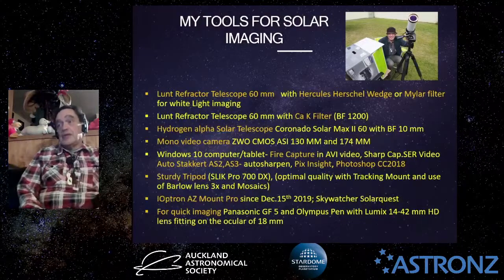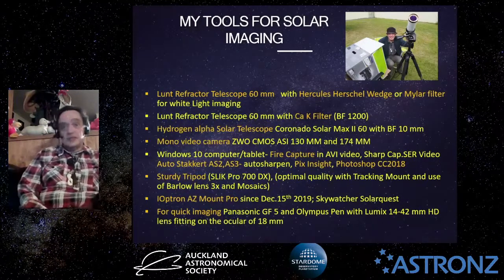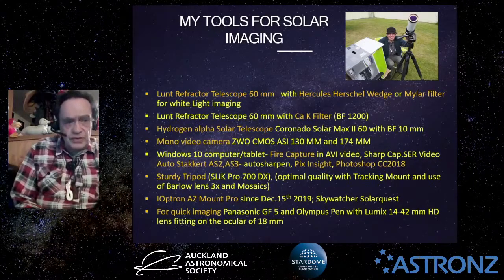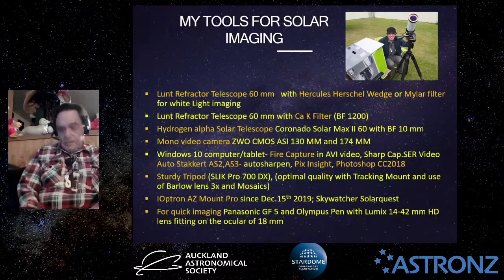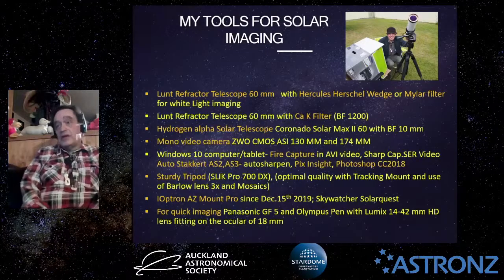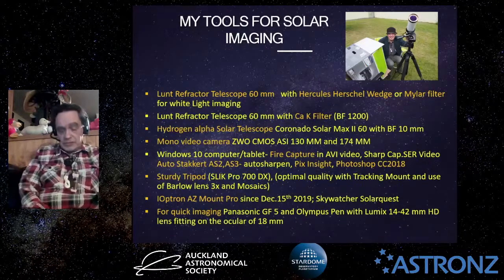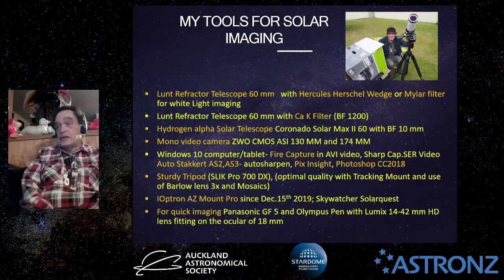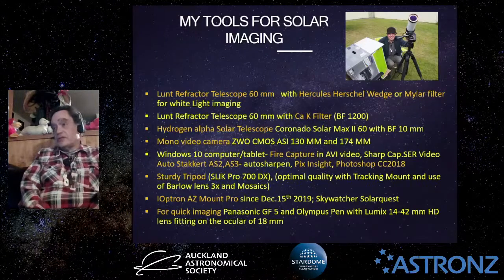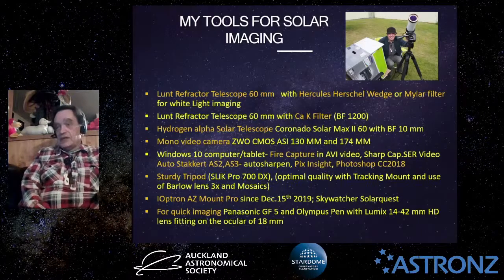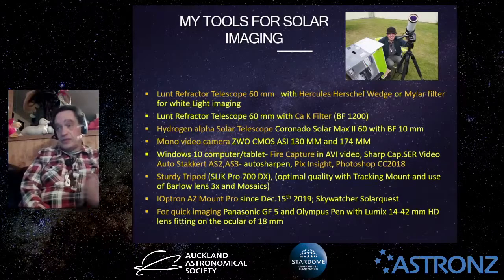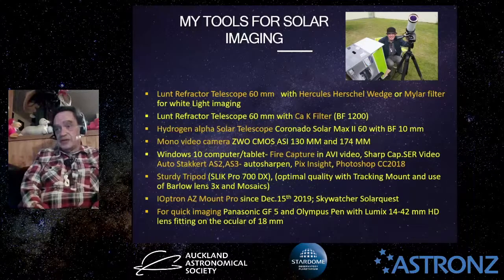Before coming to the processing of my most recent ISS transit, I'll speak about my tools for solar imaging. For travel, I use a long 60 millimeter refractor telescope. At home I have an 80 millimeter apochromatic refractor. I recently bought a Herschel wedge for white light imaging. For Calcium K, I have a Calcium K filter with a blocking filter 1200 — the better the blocking filter, the better the contrast. I also have a Hydrogen Alpha solar telescope, the Coronado SolarMax 60 with a 10 millimeter blocking filter.